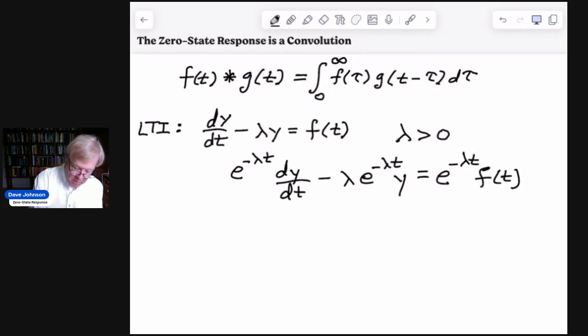And if we remember how we use the integrating factor, the left side can be rewritten as a derivative. So d/dt of [e^(-λt) times y]. We should always verify that we're doing this correctly. So the derivative of this product is first times the derivative of the second, so dy/dt, so that's this first term,